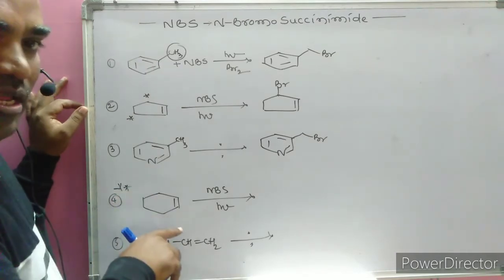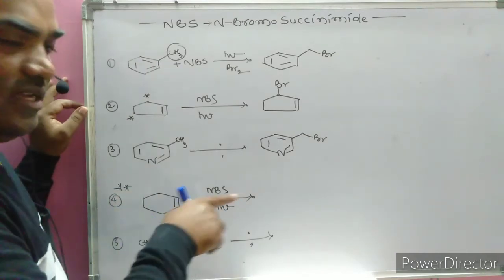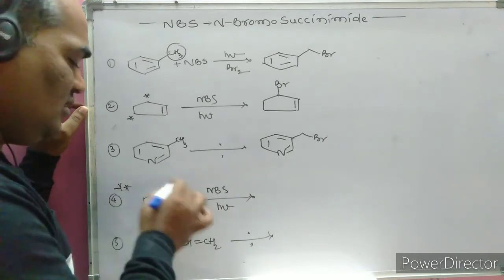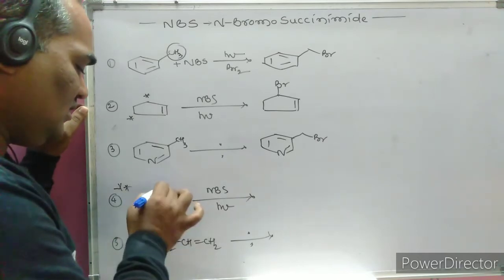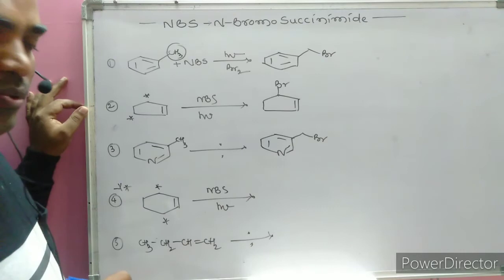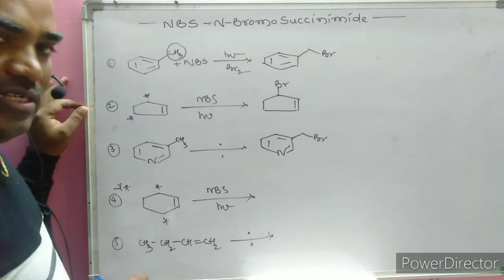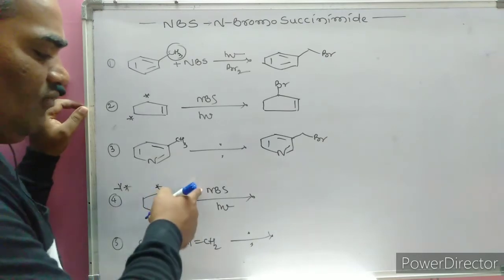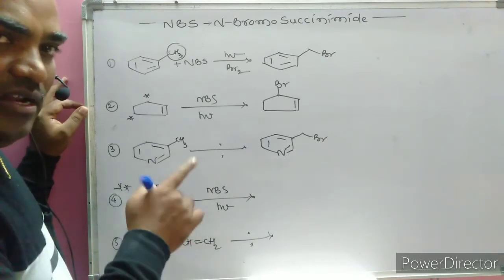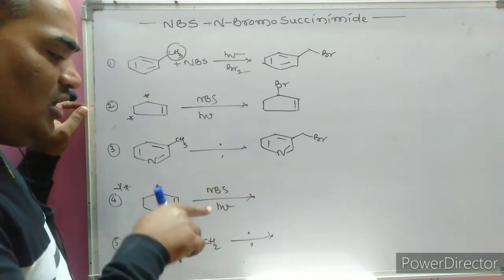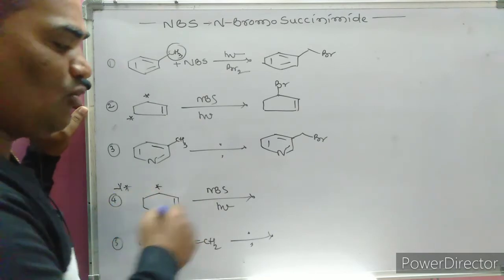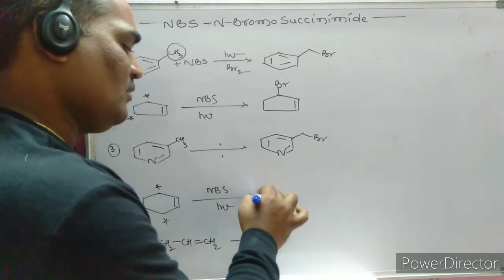A non-aromatic compound can be converted into an aromatic compound using NBS. When two allylic positions are present and two equivalents of NBS are given, one bromine substitutes at each allylic position. If only one equivalent of NBS is given, only one bromine substitution occurs at either allylic position.